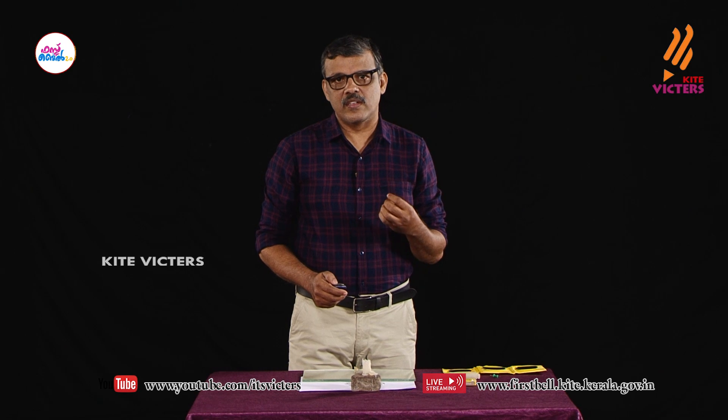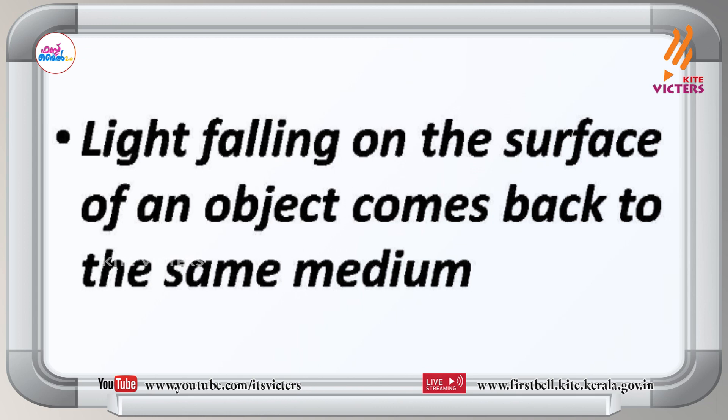What do you mean by reflection of light? Can you say the meaning of reflection of light? Light falling on the surface of an object comes back to the same medium. This is reflection of light.